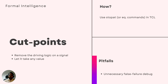Now let's discuss the concept of cut points. Cut points literally mean cutting a signal out of its driving logic while doing formal verification. If you are using Cadence Jasper Gold, you can use the command "stopat" to do it in the Tcl script. Other tools like VC Formal from Synopsys also have their own equivalent commands. Cut points are really helpful in removing the driving logic of a signal when you don't care about the value of that signal for your target verification process.